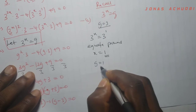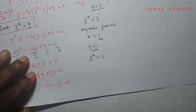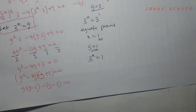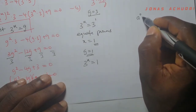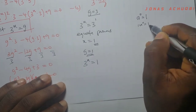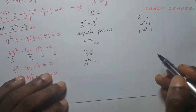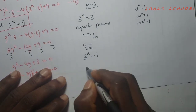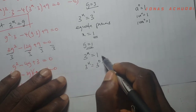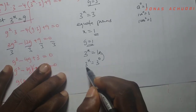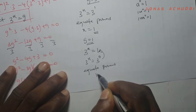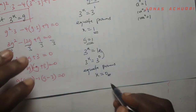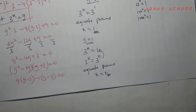For the second value g equal to 1, I have 3 to the power x equal to 1. I recall from indices that any base to the power 0 is 1, so I can write 1 as 3 raised to the power 0. The base on both sides is now 3, so I equate powers and get x equal to 0. So x equal to 0 and x equal to 1 are the two solutions of this exponential equation.